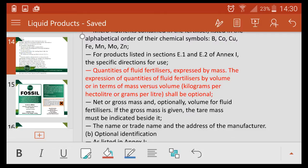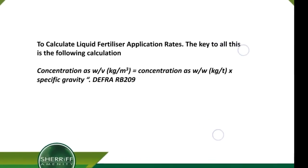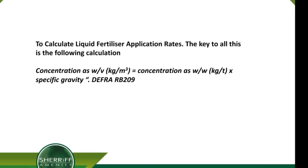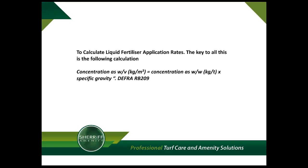Now we understand where to find specific gravity, and we also know how to determine if your liquid fertilizer is expressed as weight by weight or weight by volume. We now have all the information we need to proceed with our calculations. To calculate liquid fertilizer application rates, the key formula is: concentration as weight by volume (kilograms per cubic meter) equals concentration as weight by weight (kilograms per tonne) times specific gravity.